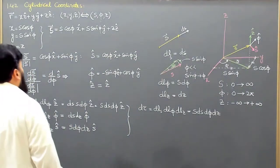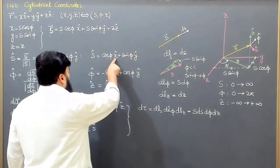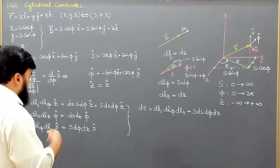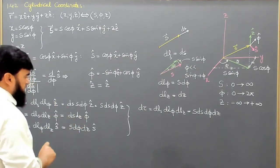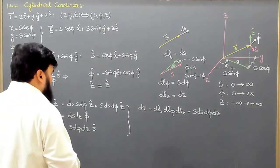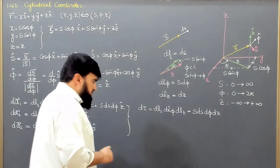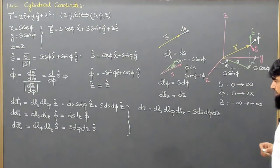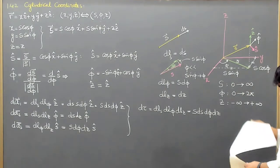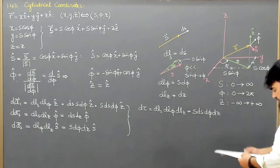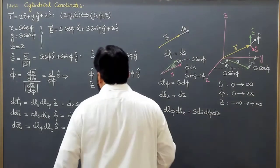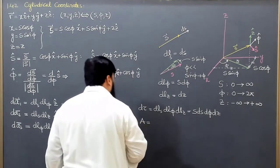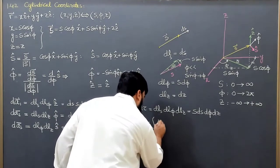Similarly, we can do coordinate conversions like writing x in terms of s, φ, and z, and y in terms of φ, s, and z — z being the same third dimension. Let me first calculate the area and then the volume of a cylinder. The area of a cylinder will be an integral over dA.